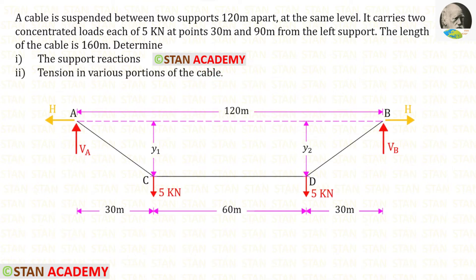We know that in this cable structure, we have symmetrical loading. In this case, the dips y1 and y2 will be the same. Let us keep this point as C and this point as D. CD will be horizontal.